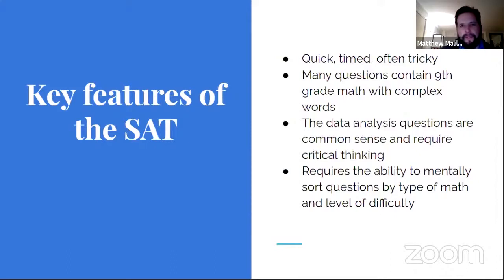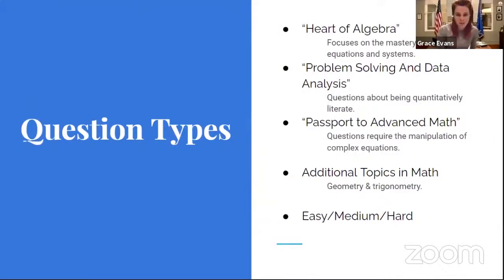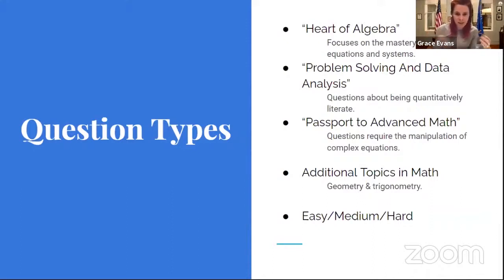Another key point about this assessment is it really requires students to be able to mentally sort through questions by type of math and then by level of difficulty. You'll see questions of three types reported in the data: Heart of Algebra, which is ninth grade math of linear equations and systems; Problem Solving and Data Analysis, which are quantitative literacy questions about surveys and basic probability; and Passport to Advanced Math, which covers 11th grade content with quadratics and some cubics. Every question is also rated as easy, medium, or hard.